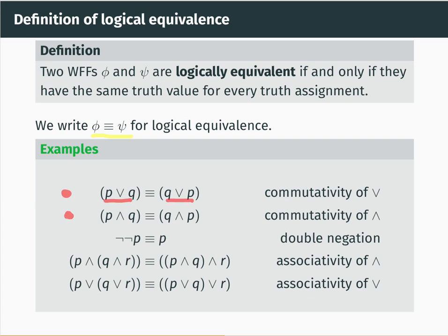For exactly the same reason, P and Q and Q and P are logically equivalent. The only truth assignments which make P and Q false are the ones where at least one of P or Q is false. And those are also exactly the truth assignments which make Q and P false.